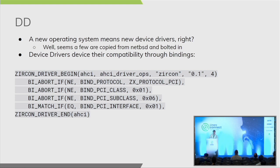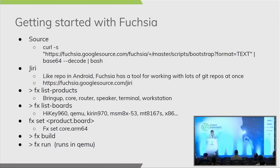When a device driver binds, they have a unique way of identifying the driver's class, subclass, and provided interfaces. Looking at some code for the AHCI driver, you can see how it introduces itself to the system. As is common with many device drivers, there are lots of magic numbers and hard-coded values. So while it's a new operating system, they aren't doing anything particularly unique compared to other operating systems' device driver models.